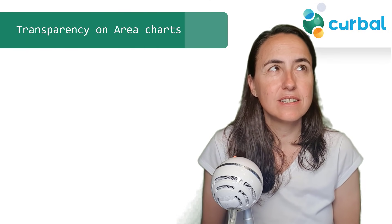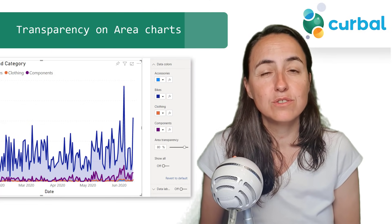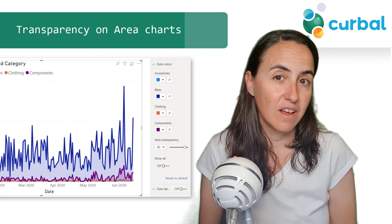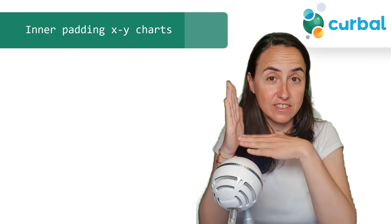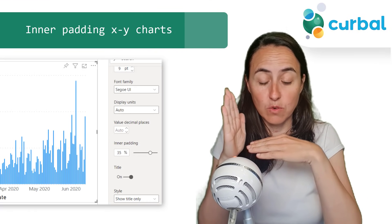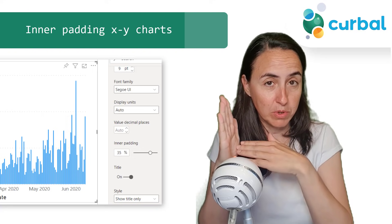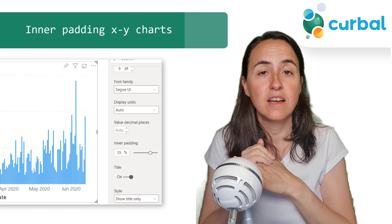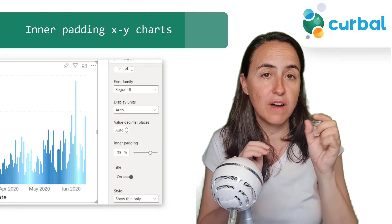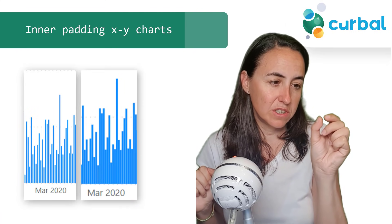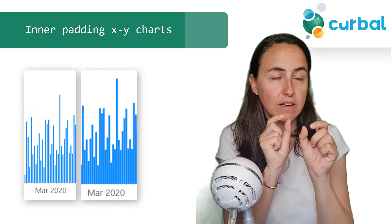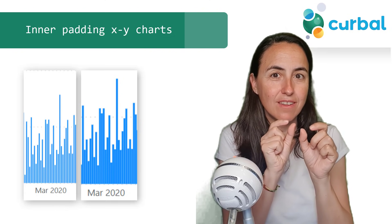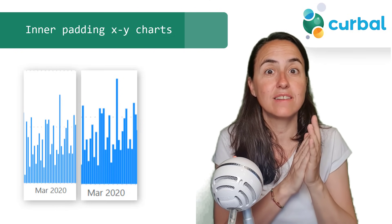The next one is a new setting that will allow you to set the transparency on area charts, which is a nice addition. For the x and y Cartesian axis with categories where you can put text on the axis, you now have the possibility to specify the inner padding — for example, in a column chart you can specify the distance between the columns, so how tight they should be.